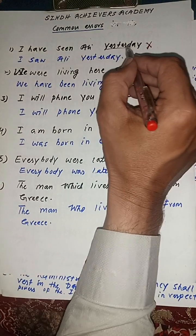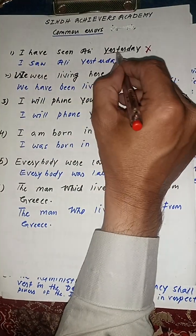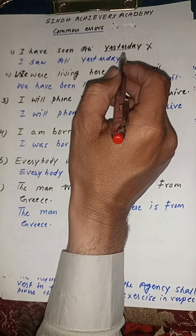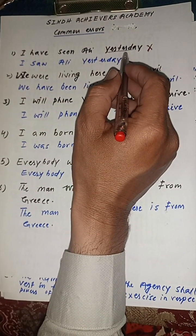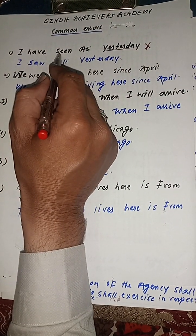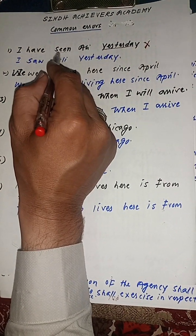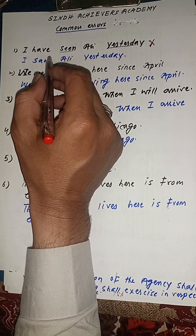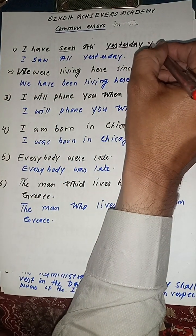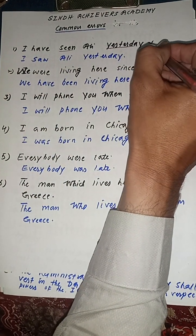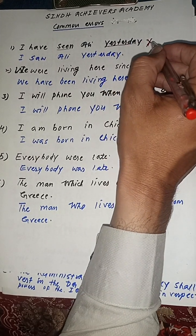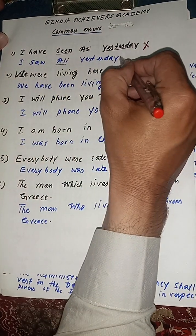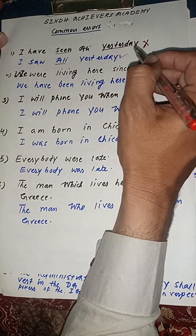Consider the sentence: 'I have seen Ali yesterday.' یہ بات past tense کی کر رہا ہے اور tense use کر رہا ہے present perfect. So, this is grammatically incorrect. 'I have seen Ali yesterday' نہیں ہوگا — the correct sentence is: 'I saw Ali yesterday.'